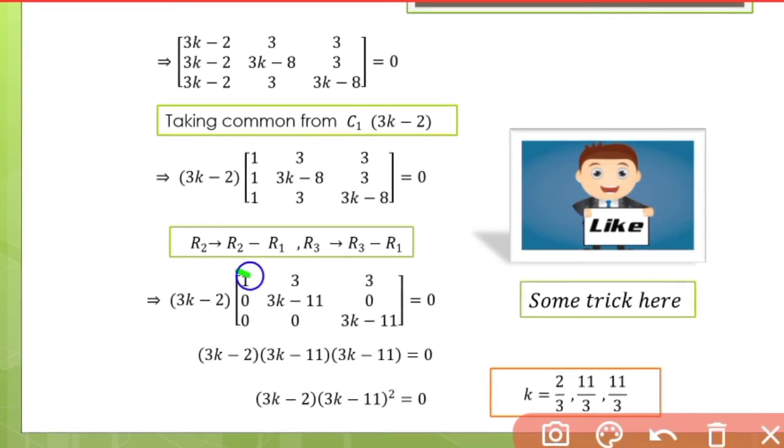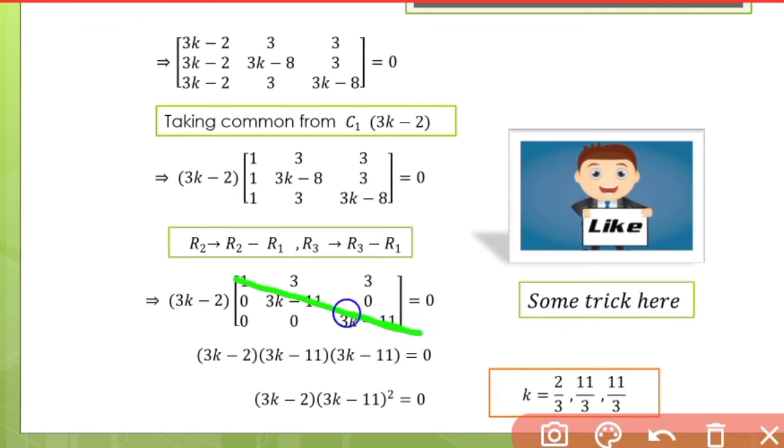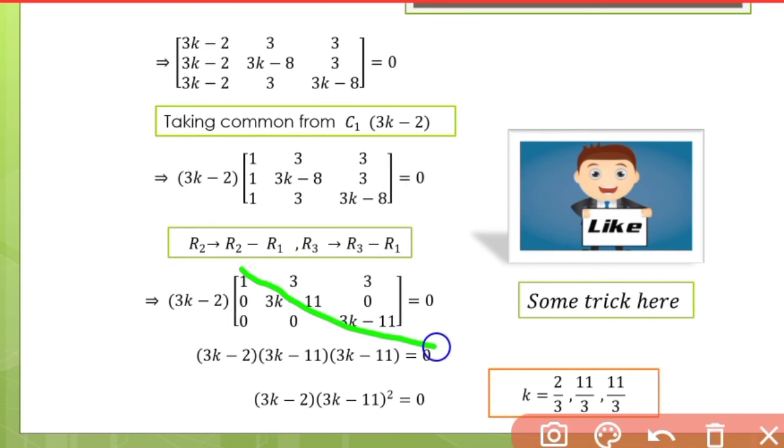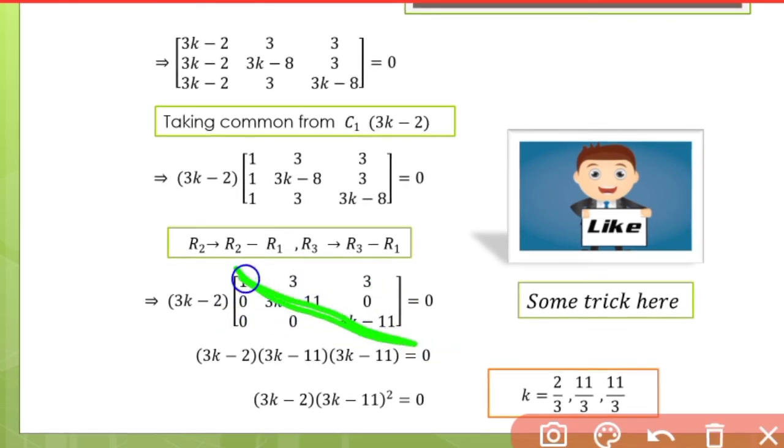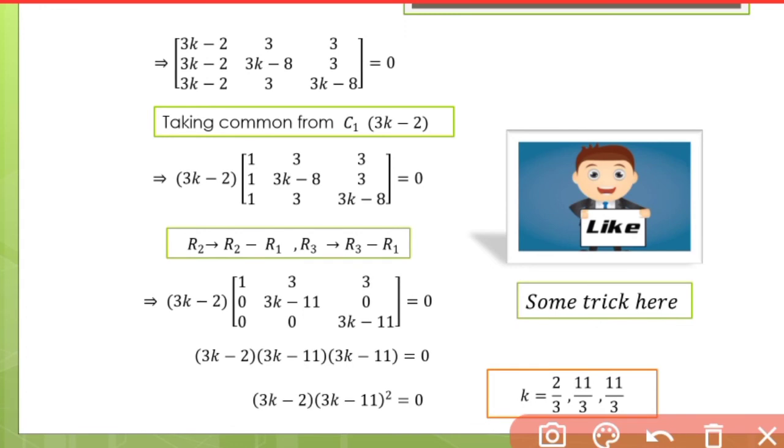I will show you a trick: when you have the diagonal element of the upper part or lower part as zero, then you can multiply the diagonal elements directly. This is a trick - if the diagonal elements of the lower or upper part are zero, you can multiply them.